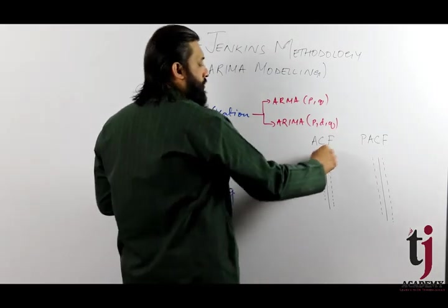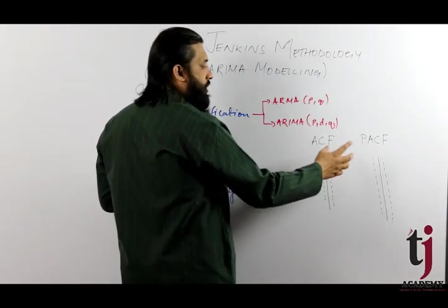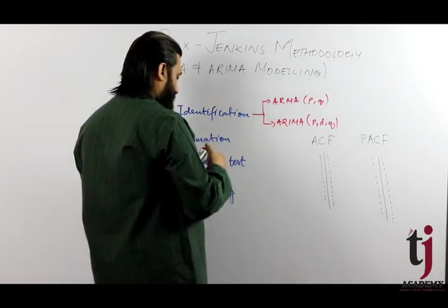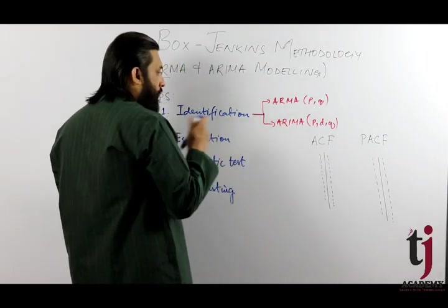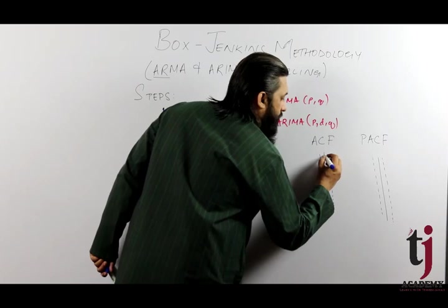This is the 5% level of significance. If the value crosses this line, then the correlation is significant. For example, in the auto-correlation function, values that cross the significance band are considered statistically significant.